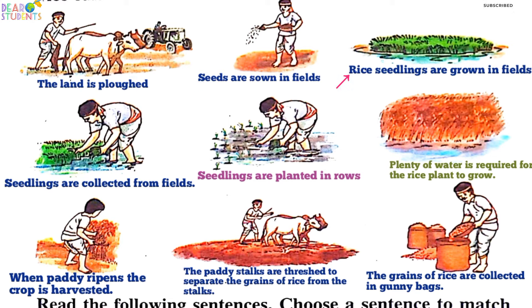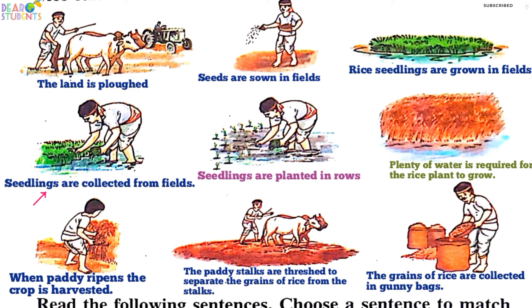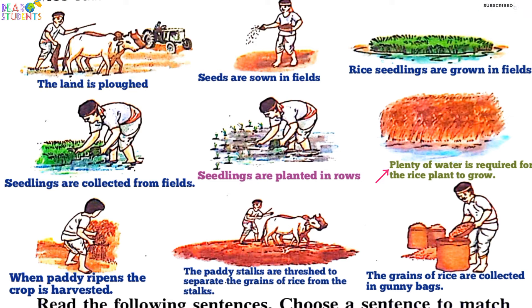The rice seedlings are grown in fields. The rice seedlings are collected from fields. The seedlings are planted in rows. Plenty of water is required for the rice plant to grow.